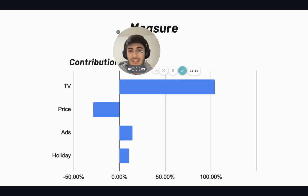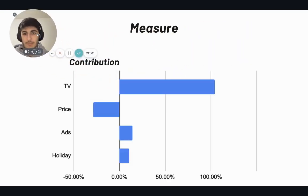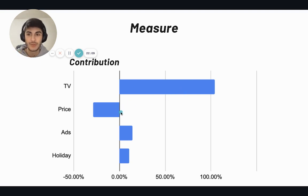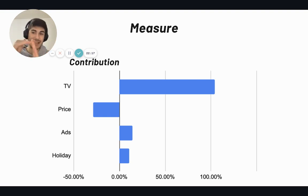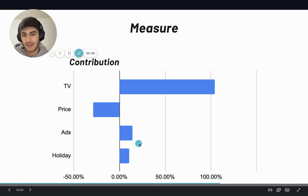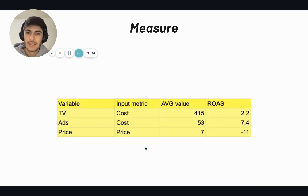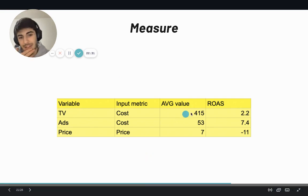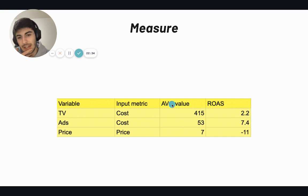We can then measure the contribution of each factor. For example, TV has a high positive contribution, while price has a negative contribution — we lower price to get more demand, so it carries a negative coefficient. Then we have ads and other channels. We can also estimate ROI or ROAS — estimating the ROAS on TV investment or ads investment.